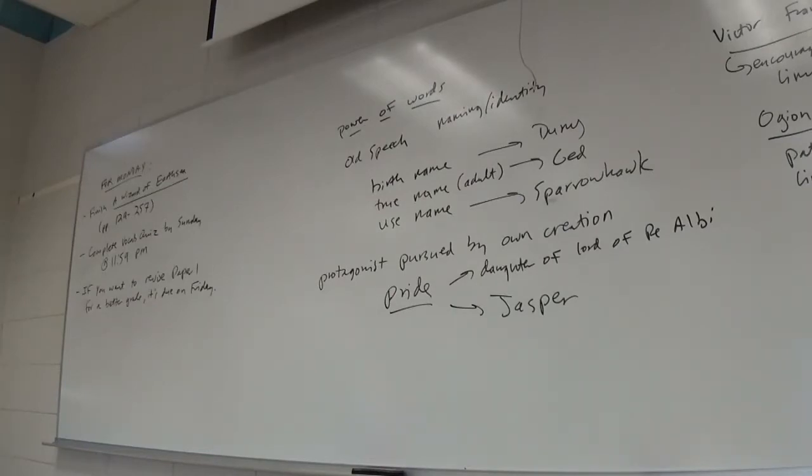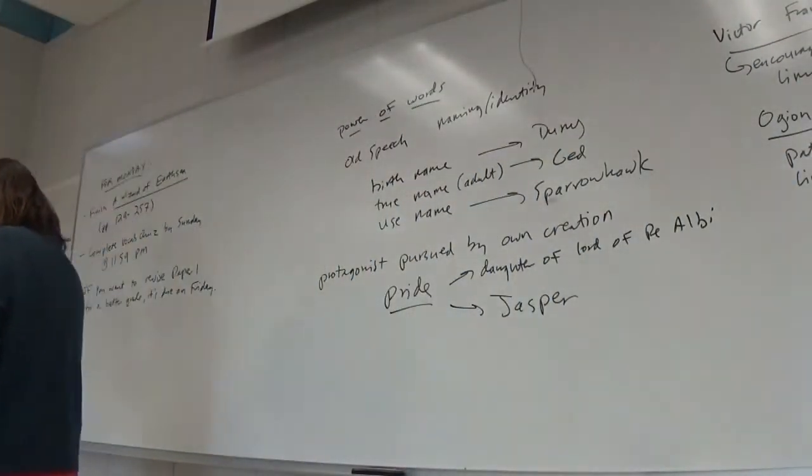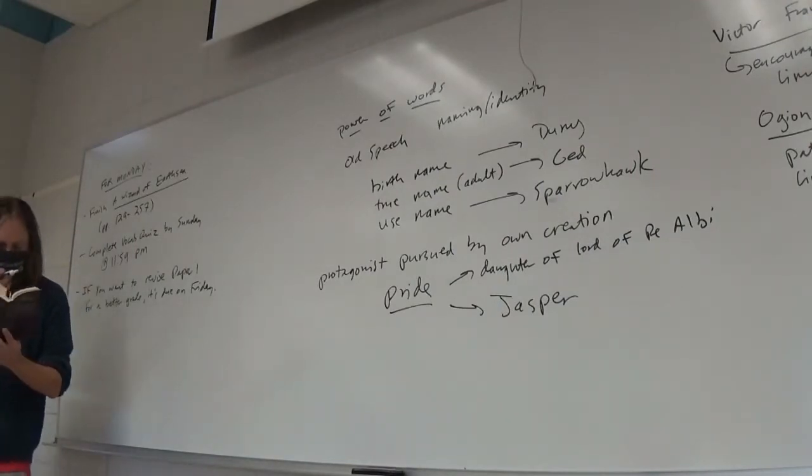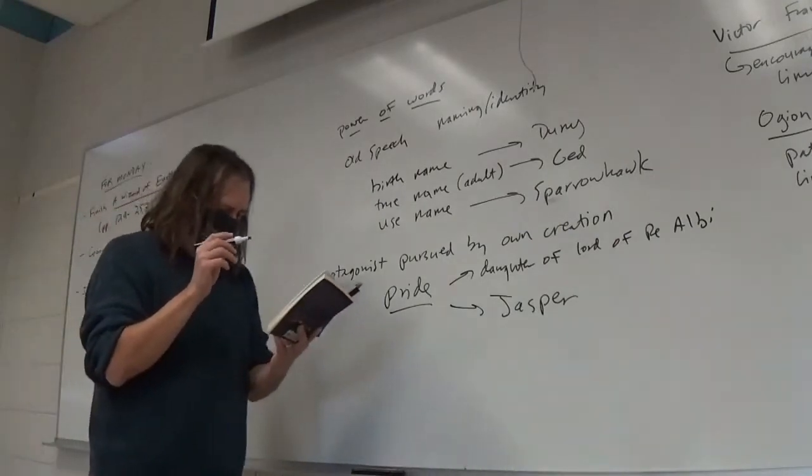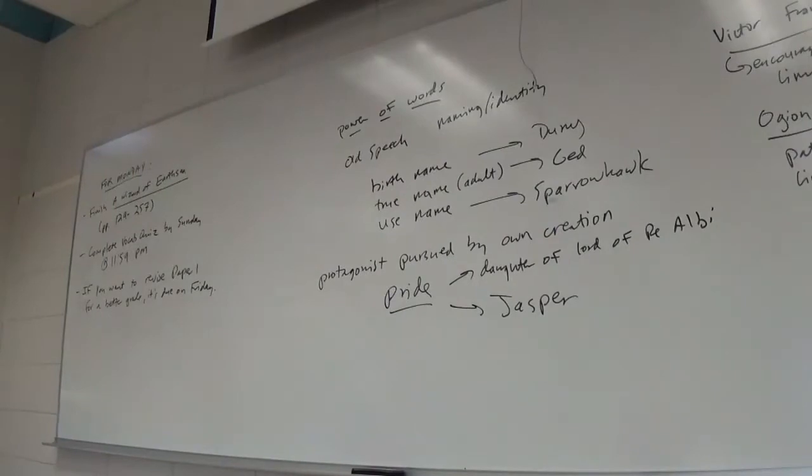And I think that this is actually really pretty important, given what we learn about the nature of magic later on. Like, when Ged has his conversation with the master hand, right, the illusionist, can we turn to page 58 here? And can I get somebody to start reading for us the last paragraph there, starting with the master hand, look at the jewel that glittered on his head's palm.